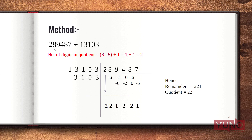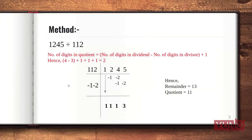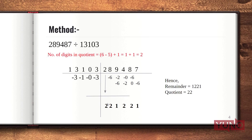So 28,289,487 divided by 13,103. Here the number of digits in the quotient is 8 digits of the dividend minus 5 digits of the divisor plus 1, which gives 2. Now writing the divisor with the transpose: the leftmost digit 1 is left as it is, and the remaining digits are written with negative signs — minus 3, minus 1, 0 (which remains 0), and minus 3. This first digit of the dividend, 2, is then multiplied with all the transposed divisor digits.